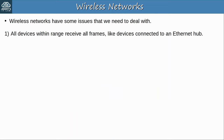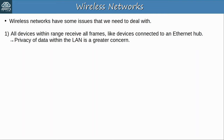Because all devices within range receive the frames, privacy of data within the LAN is a greater concern. In wired networks we don't usually encrypt data within the LAN, only when sending data over a shared network such as the Internet. However, for wireless networks it is very important to encrypt data even within the LAN, or else anyone with a device in range of the transmitter can access that data.